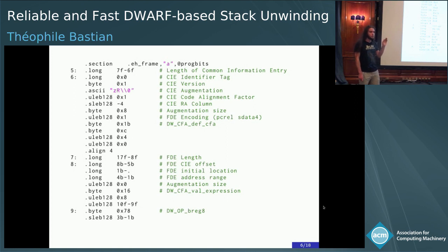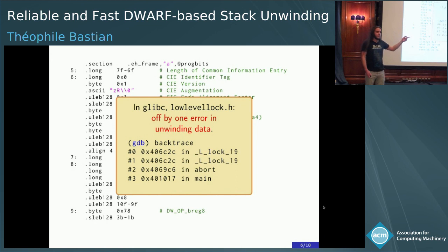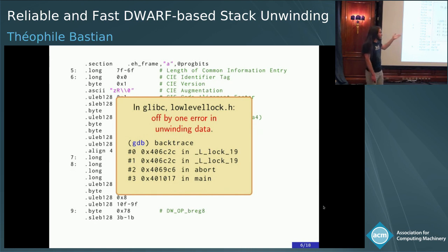This is glibc — experienced, expert programmers who really know what they're doing. And nevertheless, they had an off-by-one error in the unwinding data. As a result, if you ask for a backtrace in the wrong location, you get a duplicated printing of the same stack frame because GDB didn't manage to get it right. What if it was another error that made GDB simply unable to print a backtrace? Then you cannot work — that's not nice.